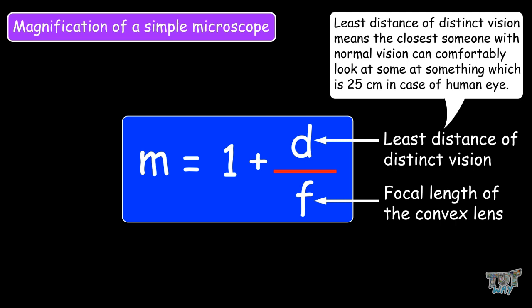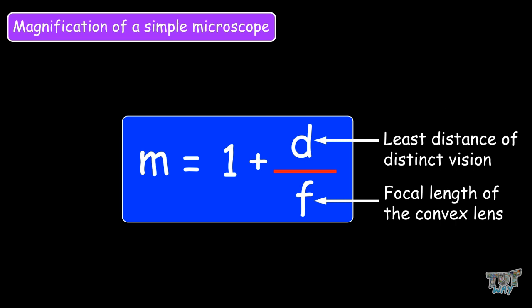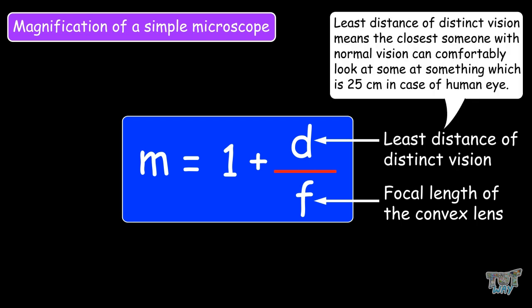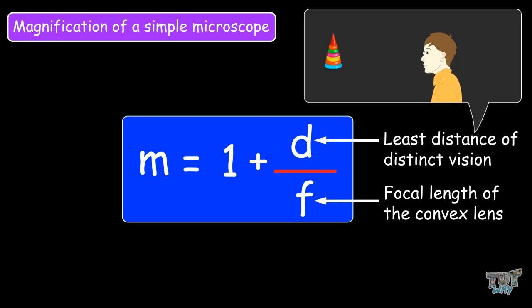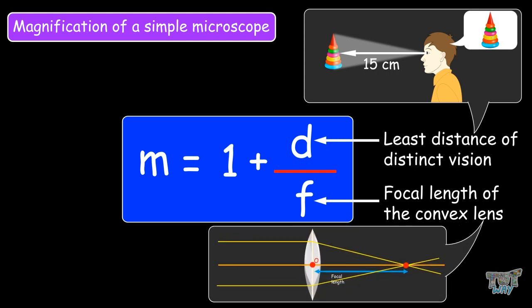So now we know what is the formula for finding the magnification of a simple microscope. It is M equals 1 plus D by F, where D is the least distance of distinct vision and F is the focal length of the convex lens. So magnification depends upon the focal length. The lower the focal length, the greater will be the magnifying power of the simple microscope. Now we know what is a simple microscope. Let's learn about the types of other microscopes that exist.